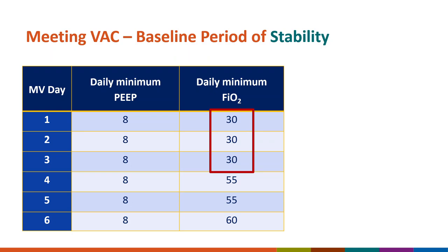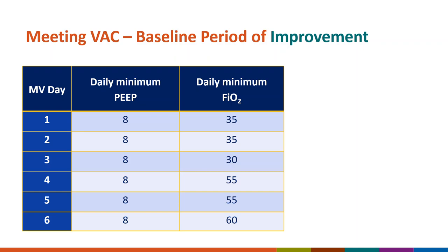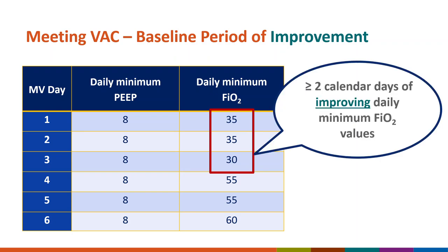A baseline period of stability means the daily minimum FIO2 or PEEP on the second day of the baseline period is equal to that on the first day. A baseline period of improvement means the daily minimum FIO2 or PEEP on the second day is less than on the first day. Here we have daily minimum FIO2 values that are decreasing — this would be a baseline period of improvement.